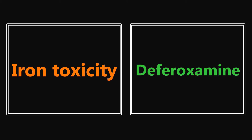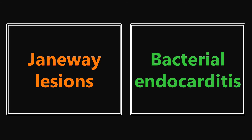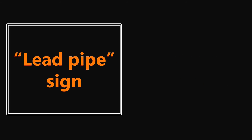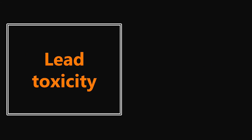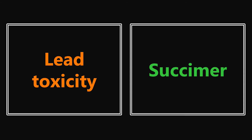Iron toxicity — usually if they mention this, they want you to know the antidote, which is deferoxamine. There are a couple of other drugs that have 'FE' somewhere in the name, since FE is iron, but the most common one is deferoxamine. Janeway lesions — if you see this in a patient, they're most likely pointing to bacterial endocarditis. The lead pipe sign — if you see this on x-ray of the abdomen or intestines, it's a loss of haustra in the large intestine and it's pointing to ulcerative colitis. Lead toxicity — you want to know the treatment, which is succimer.